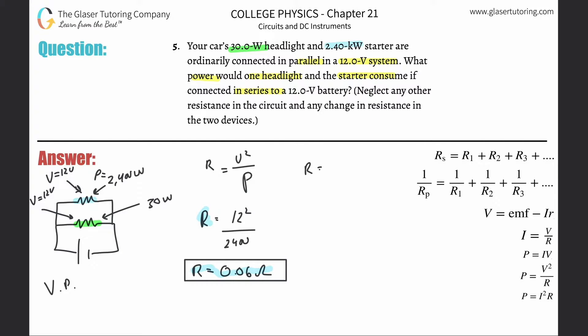Now for the green resistor — the headlight — same formula: R = V²/P = 12 squared divided by 30, which gives us 4.8 ohms.